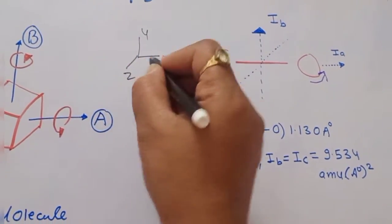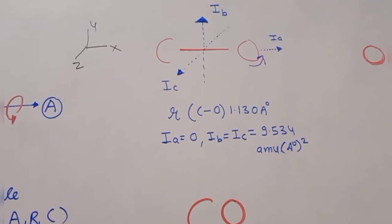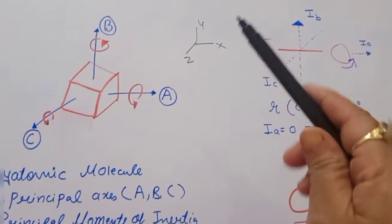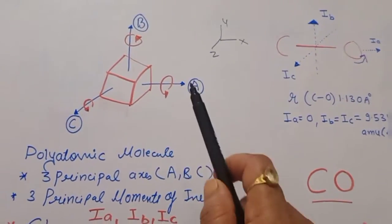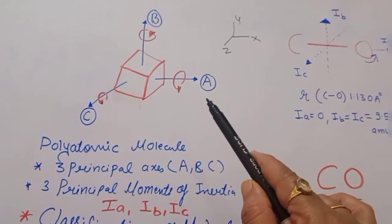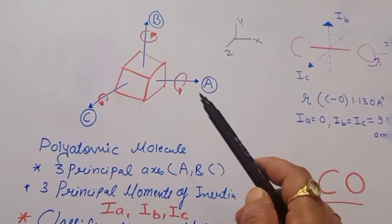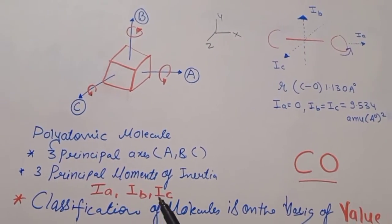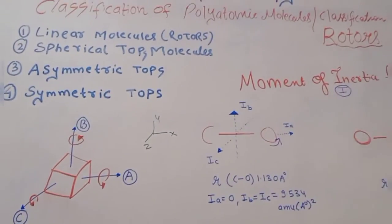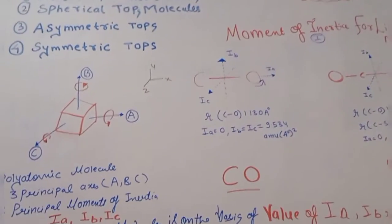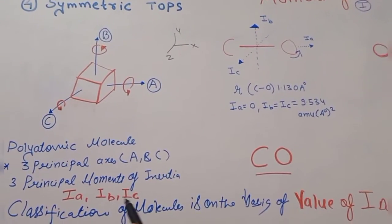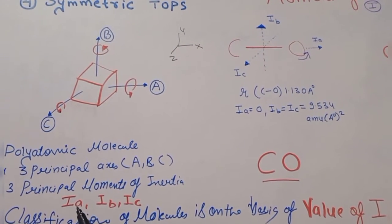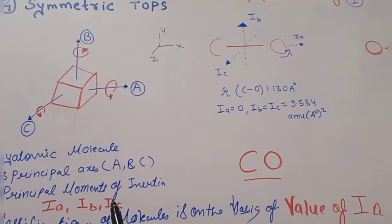There are nine possible moments of inertia, but for any 3D system, three principal moments of inertia are considered: Ia, Ib, and Ic, corresponding to axes a, b, and c. We classify polyatomic molecules on the basis of the values of Ia, Ib, and Ic, as the molecules undergo rotation in microwave spectroscopy.